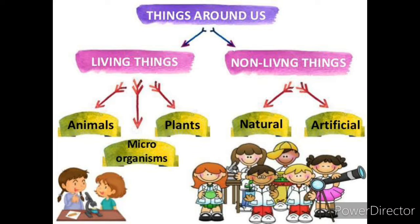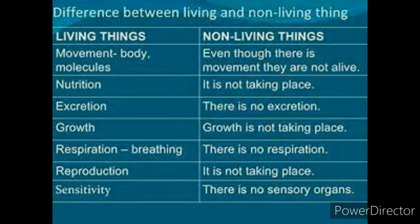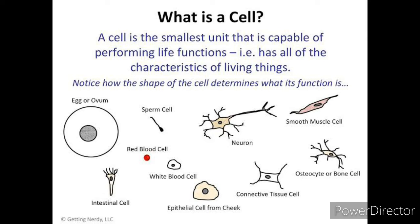When you look around, you see both living and non-living things. For living things, we have certain characters which are not present in non-living things — characters like growth, breathing, movement, and reproduction are confined only to living things. So what makes a living thing different from a non-living thing?